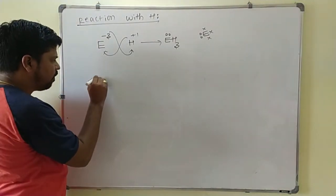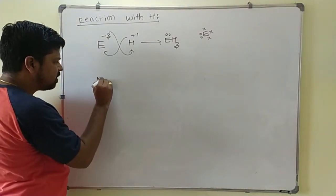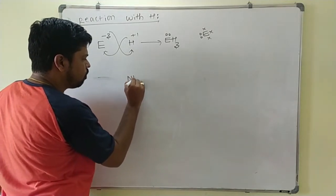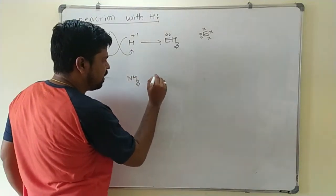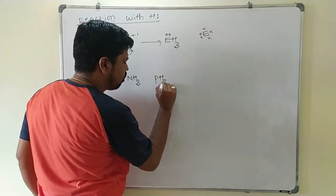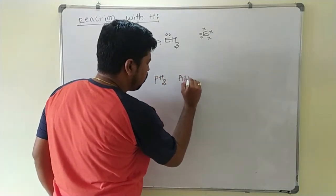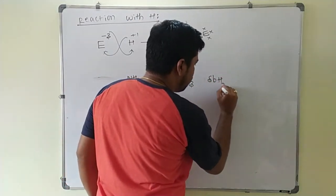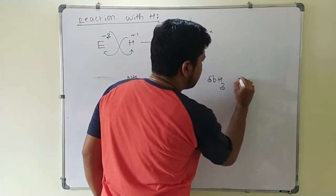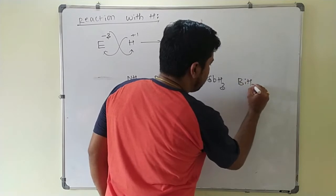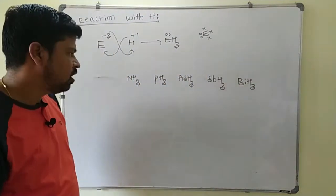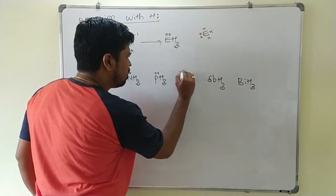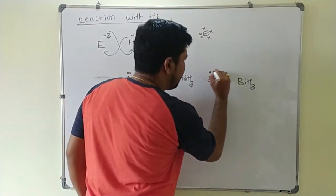Now we will write the Group 15 hydrides: NH3, PH3, AsH3, SbH3, and BiH3. In each hydride, there is a lone pair of electrons present on the central atom.